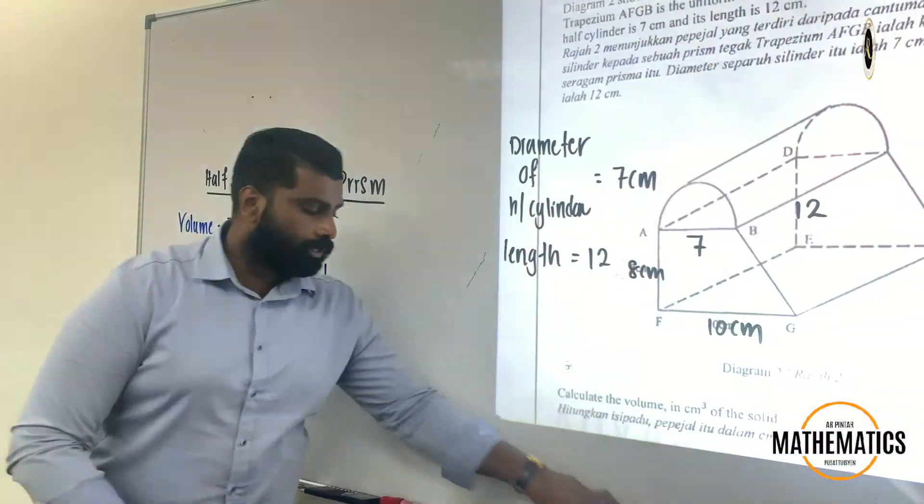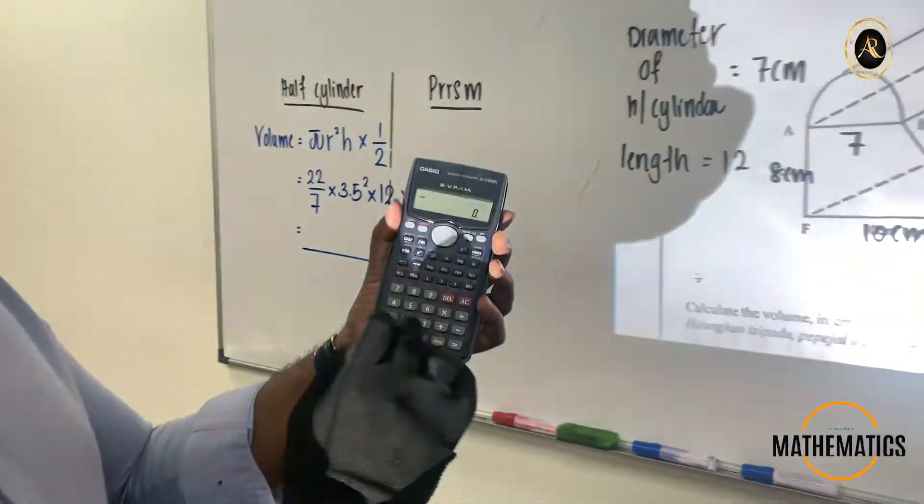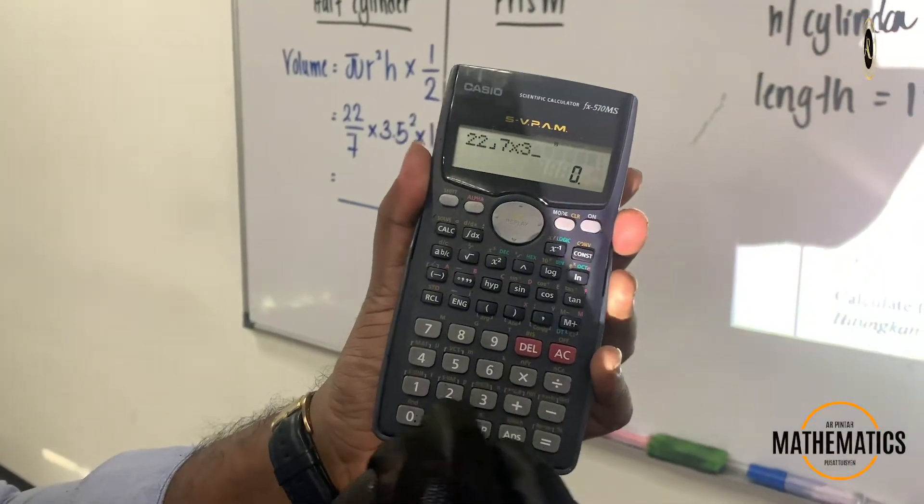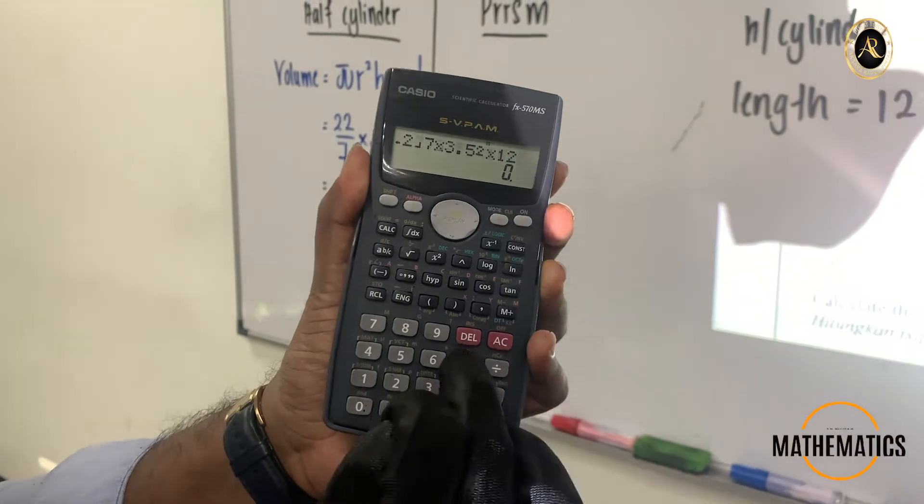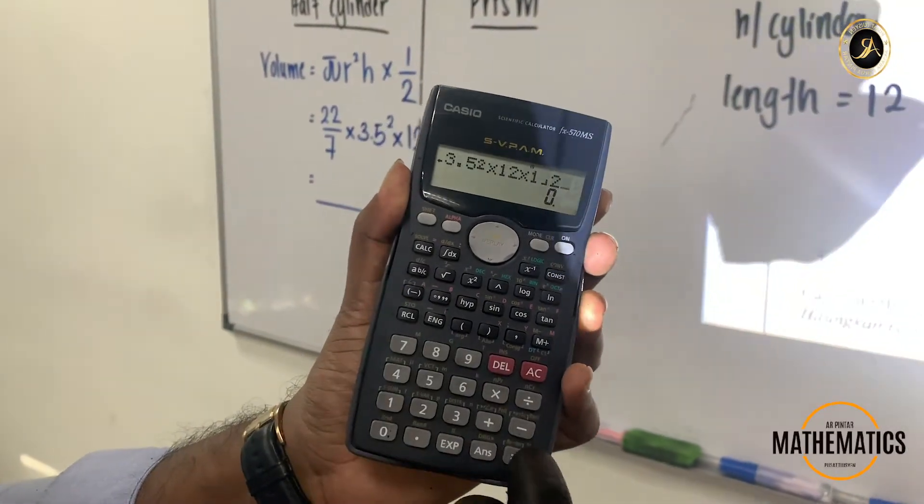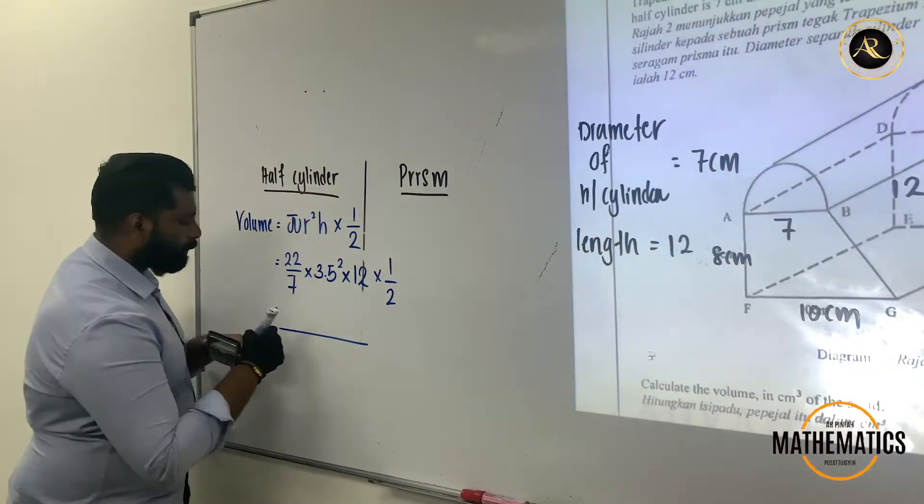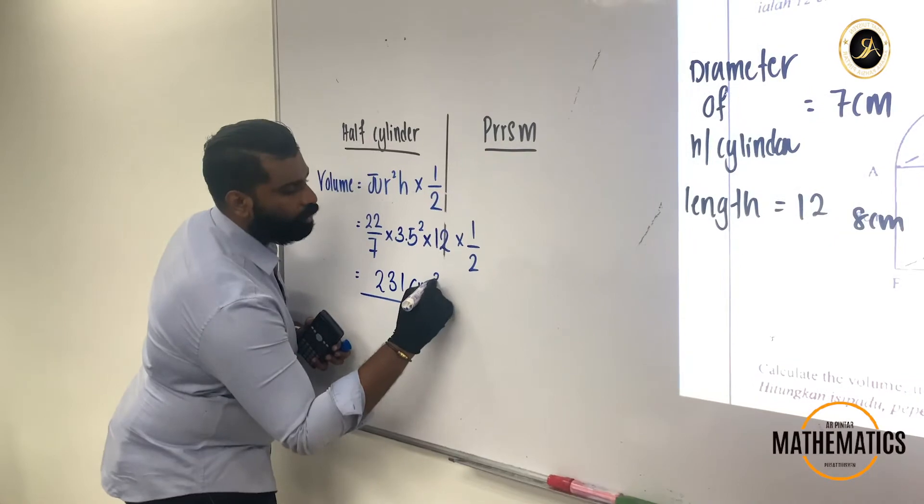So you will get the volume for half cylinder. Let me calculate for you. You can see the calculator here: 22 over 7 times with 3.5 square times with 12 times with 1 over 2. So you will get 231. The number here representing 231 cm cube.